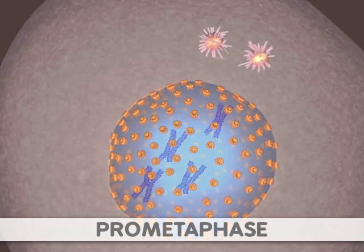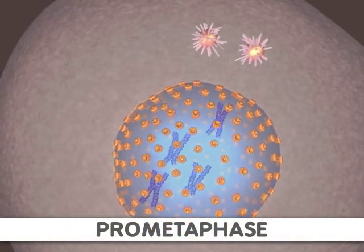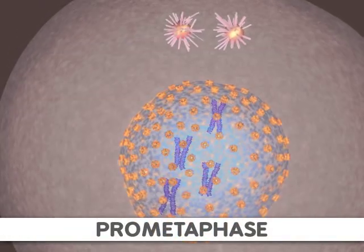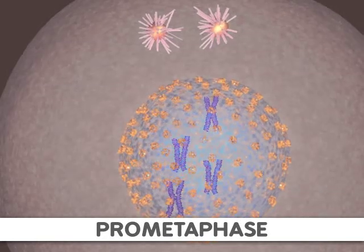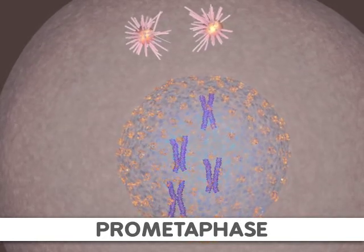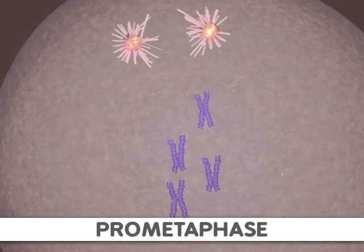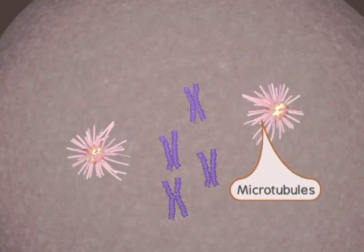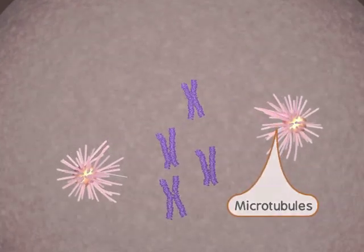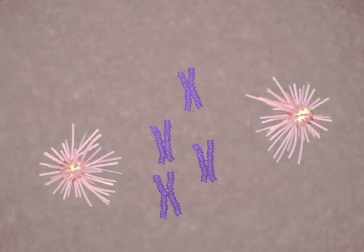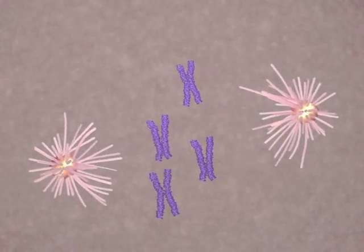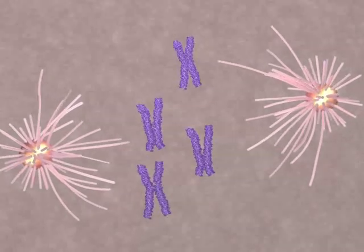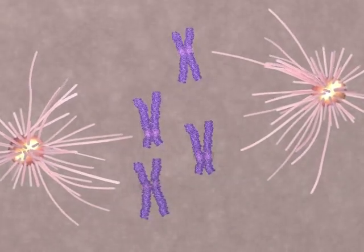Next, prometaphase begins when the nuclear membrane is broken down. At the same time, microtubule strands, or spindle fibers, are growing from the centrosomes. These strands attach to a protein structure called the kinetochore. One kinetochore is attached to the centromere of each sister chromatid.